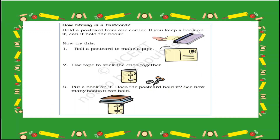Activity number two: How strong is a postcard? Hold a postcard from one corner. If you keep a book on it, can it hold the book? No, the postcard cannot hold the book on the top. So now let's make our postcard stronger. Try this — number one: Roll a postcard to make a pipe. Number two: Use tape to stick the ends together. Number three: Put a book on it. Does the postcard hold it? See how many books it can hold!